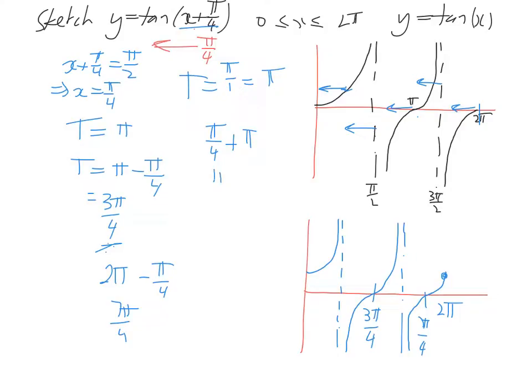So we've got an asymptote, like we said, at pi on 4. And this is a plus pi, or 4 pi on 4. So pi on 4 plus 4 pi over 4, so we've got 5 pi over 4.